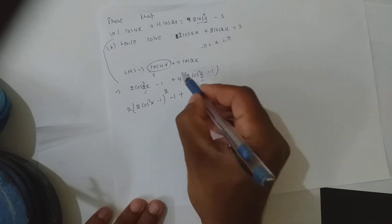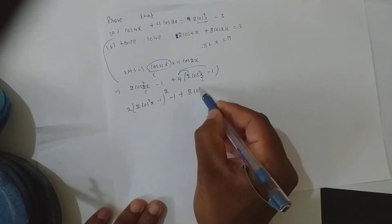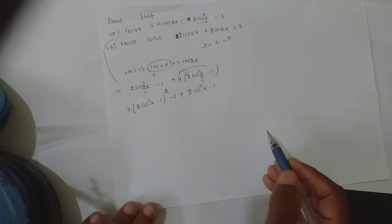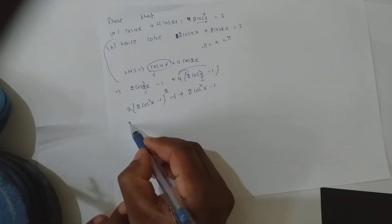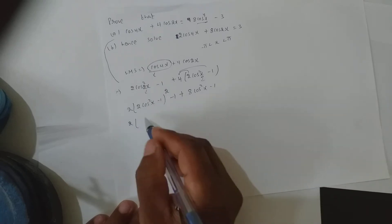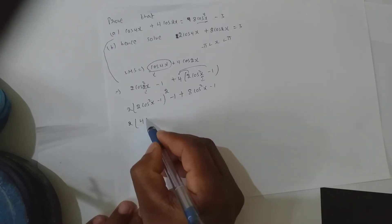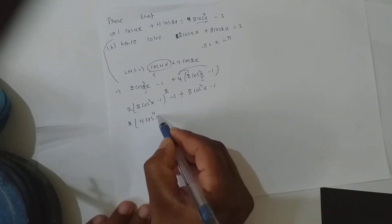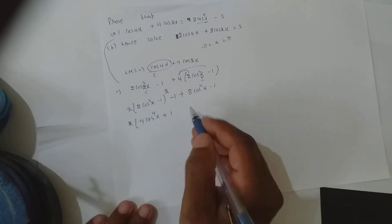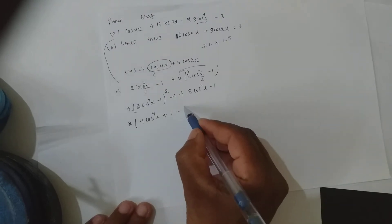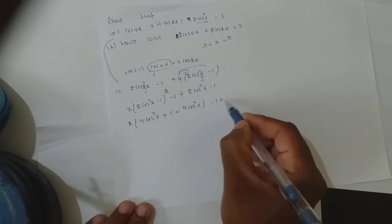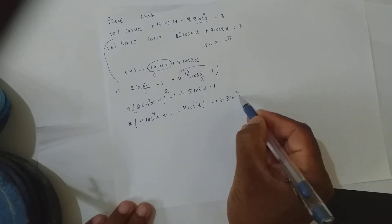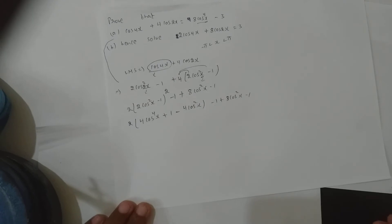Multiplying with 4: how much do you get? 8 cos²x minus 1. Now, I should not multiply directly because it is of the form (a − b)². So a² is 4cos⁴x plus b² is 1, minus 2ab: 2 × 2 = 4 cos²x. Then minus 1 plus 8 cos²x minus 1. I just expanded (a − b)².